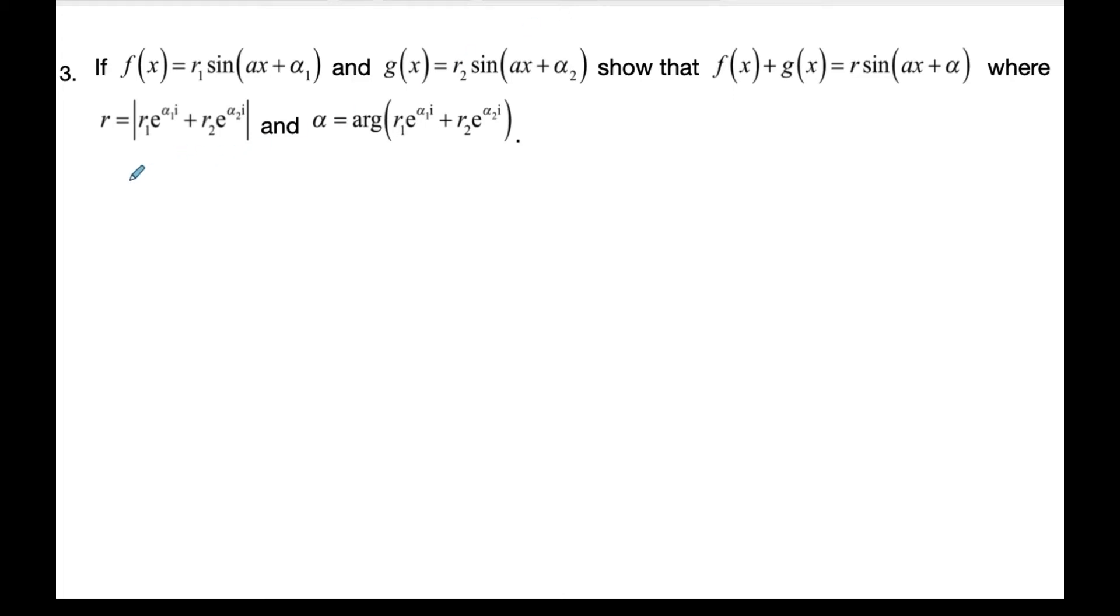Okay, so in this example here we are going to add F and G where this is all purely generalized. There's no actual values and we want to actually combine them together. I got alpha 1, I got alpha 2 as my shift. What's key here is my B values are the same so they have a common frequency.